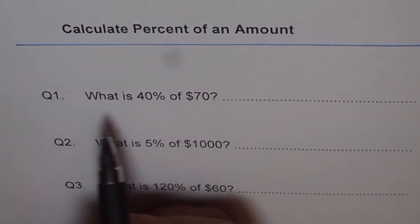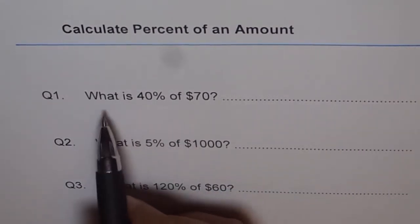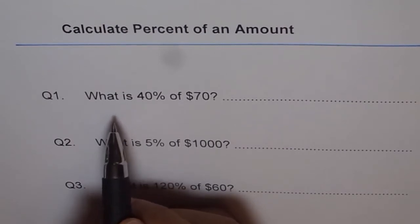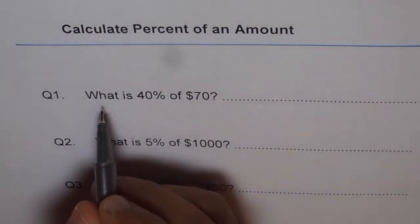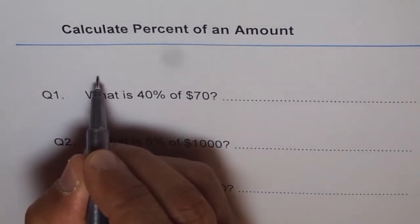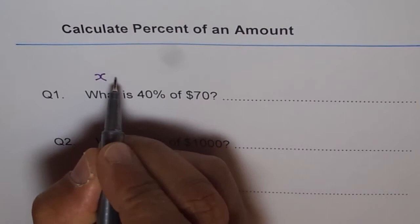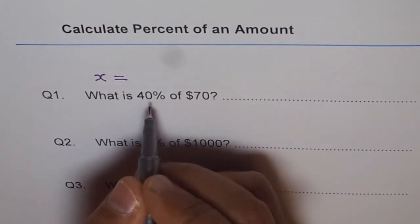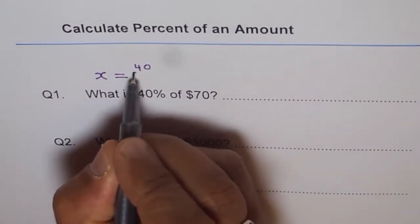What is 40% of 70? We will literally translate each and every word in this sentence and make it an equation. We have 'what is' — we don't know what, so we write a variable x. 'Is' means equals to. 40% means 40 per hundred, so it becomes 40 over 100.